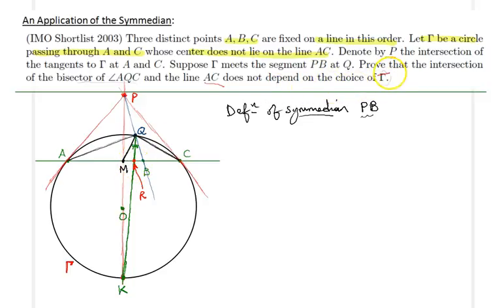What this says is that I can change, I can make the circle gamma smaller and larger. As long as it goes through the points A and C, that point R is fixed. So the point R, which is the intersection of the angle bisector of AQC and AC, is fixed independent of the selection of the circle. So we can apply the angle bisector theorem.